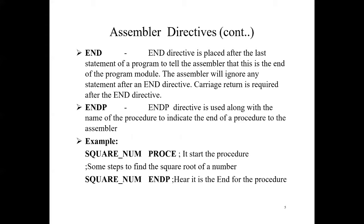Next is END (End of Program). The END directive is placed after the last statement of a program to tell the assembler this is the end of the program. The assembler will ignore any statement after an END directive. A carriage return is required after the END directive. ENDP means End Procedure. The ENDP directive is used along with the name of the procedure to indicate the end of a procedure to the assembler. In assembly language programming, subroutines are called procedures.